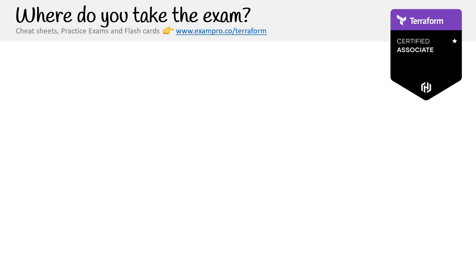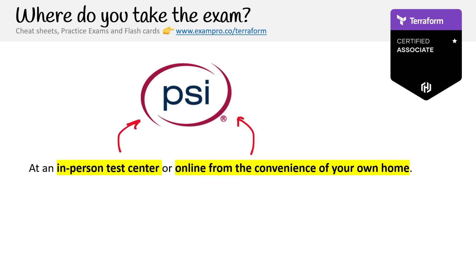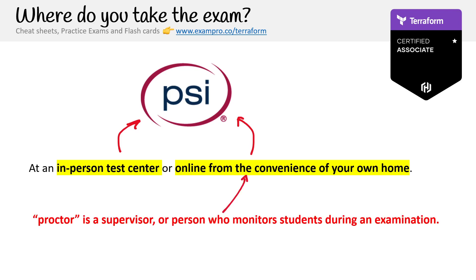Where do you take this exam? You can take it at an in-person test center or online from the convenience of your own home. The test center HashiCorp uses is PSI or PSI Online. Understand that this is a proctored exam — someone is supervising and monitoring you as you take the exam to ensure there's no cheating and that you gained the knowledge in a reputable way.